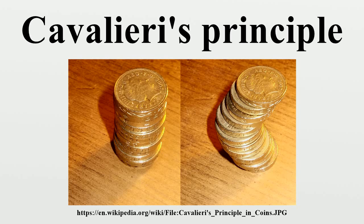The transition from Cavalieri's indivisibles to Evangelista Torricelli's and John Wallis's infinitesimals was a major advance in the history of calculus. The indivisibles were entities of codimension 1, so that a plane figure was thought of as made out of an infinity of one-dimensional lines. Meanwhile, infinitesimals were entities of the same dimension as the figure they make up; thus a plane figure would be made out of parallelograms of infinitesimal width, applying the formula for the sum of an arithmetic progression.